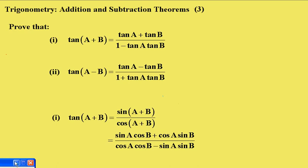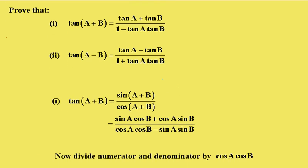The next step, we divide the numerator and the denominator by cos A cos B.